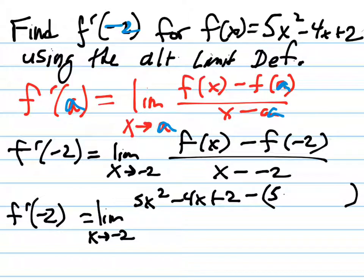minus 4 times negative 2. Negative 2 times negative 4 is 8, so plus 8, plus 2. And all of this is over, as you probably could tell, x plus 2.